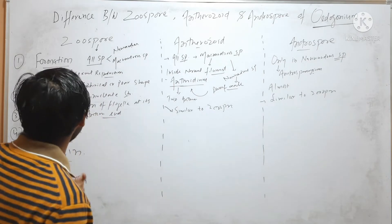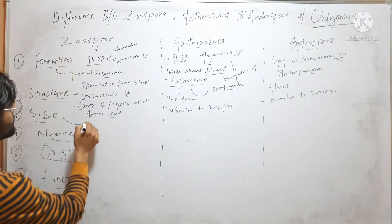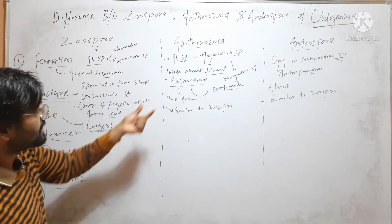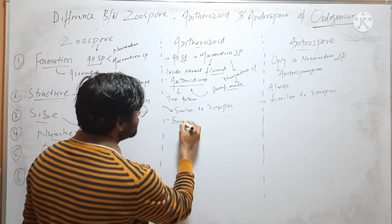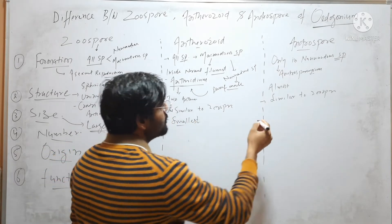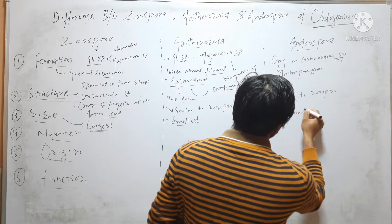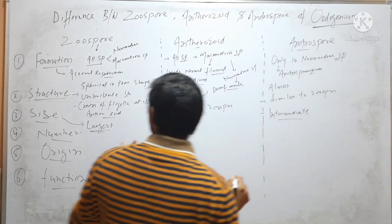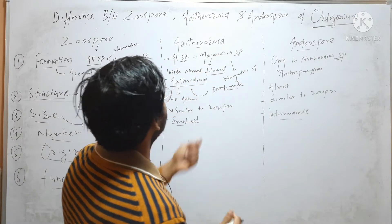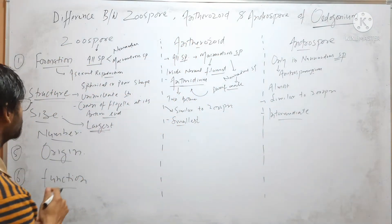When it comes to size, Zoospore is the largest one and Antherozoid is the smallest. Androspore is intermediate — its size lies between Zoospore and Antherozoid. It is larger than Antherozoid but smaller than Zoospore.